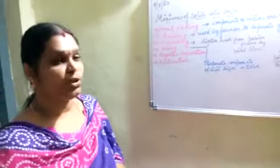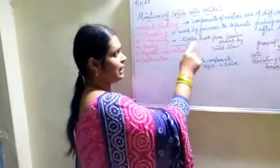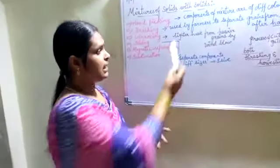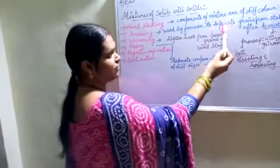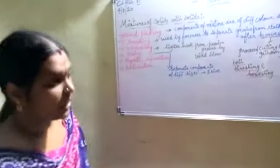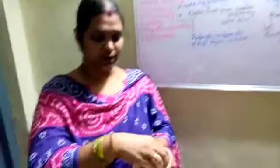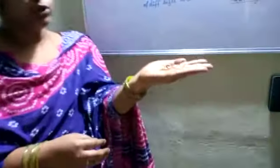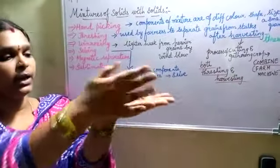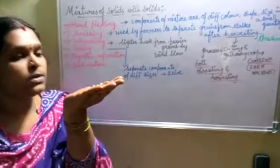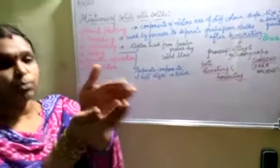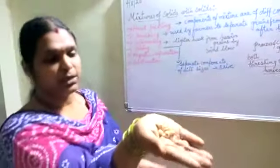Now coming to the third method — winnowing. Winnowing is a process of separating the lighter husk from the heavier grains. After separating the grains, they get the husk. I can show you — these are groundnuts with an outer layer, which is called husk. By raising it to a height and blowing, I rub it and blow. When I blow the air, the husk gets separated and the heavier ones fall down.